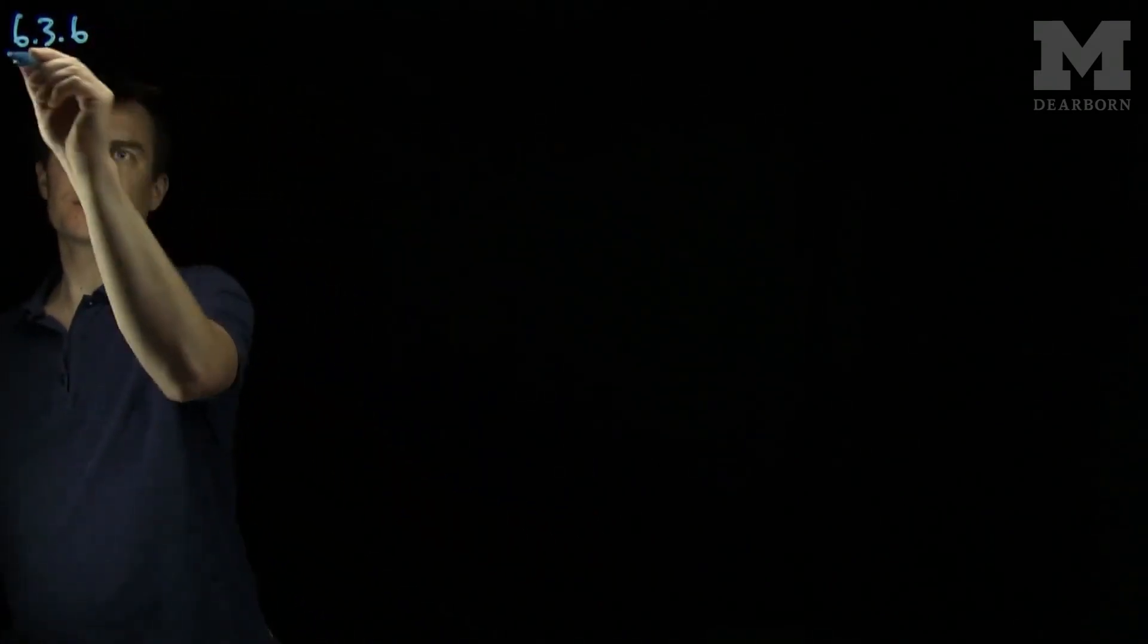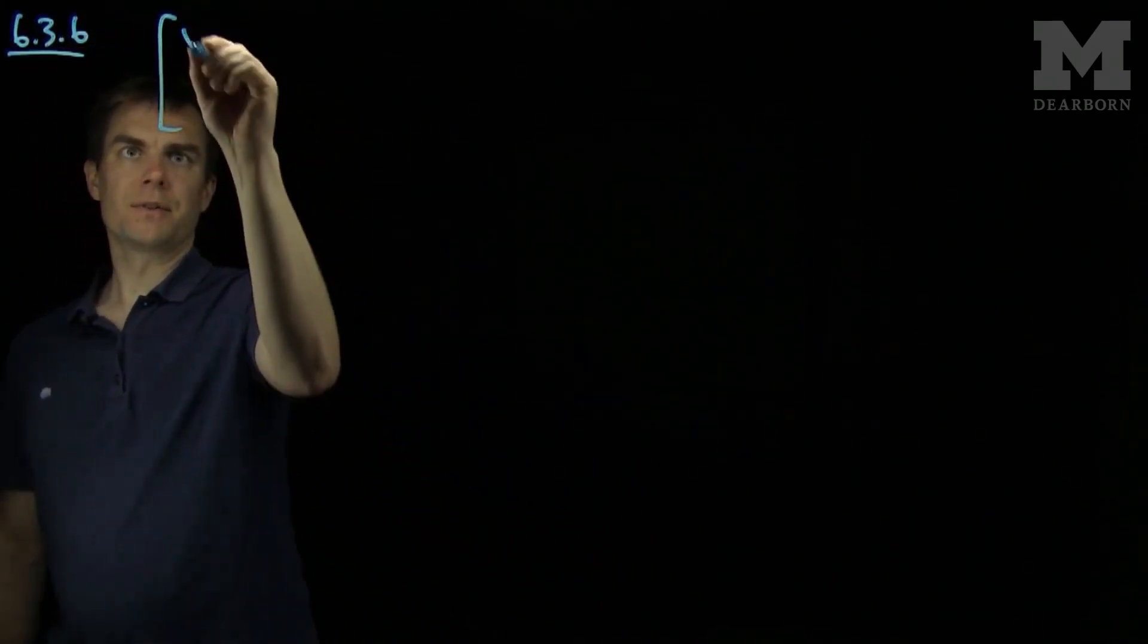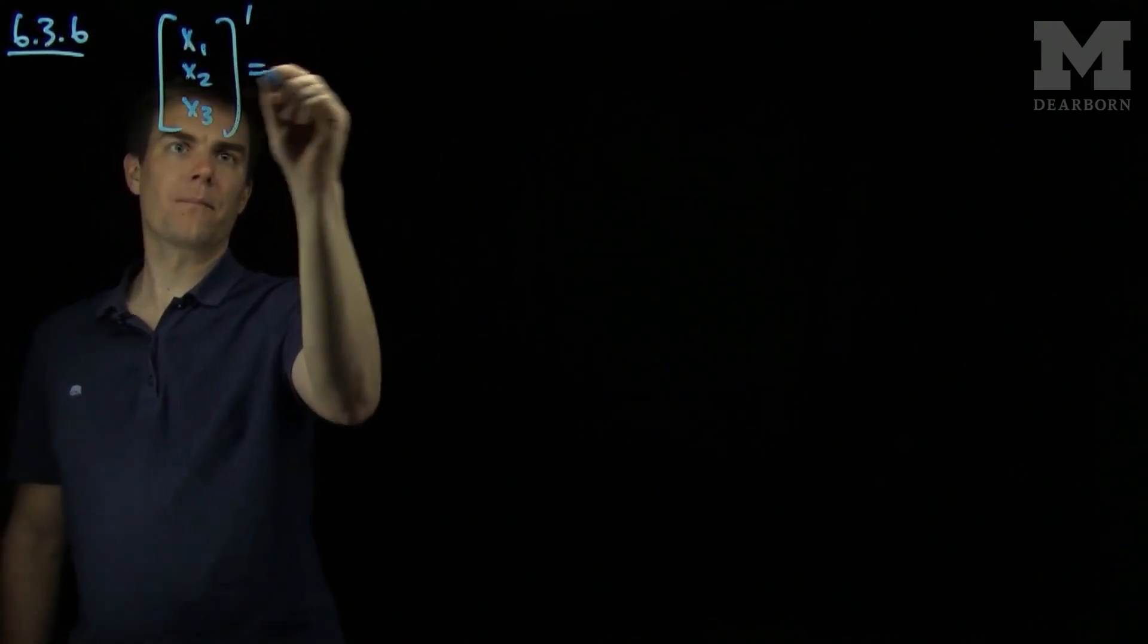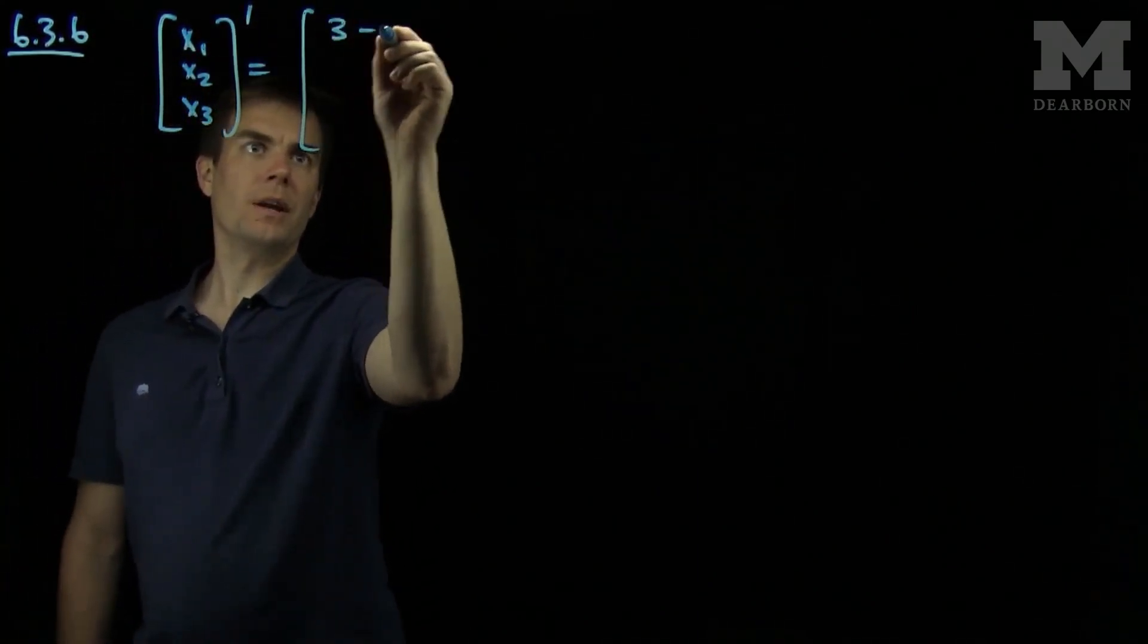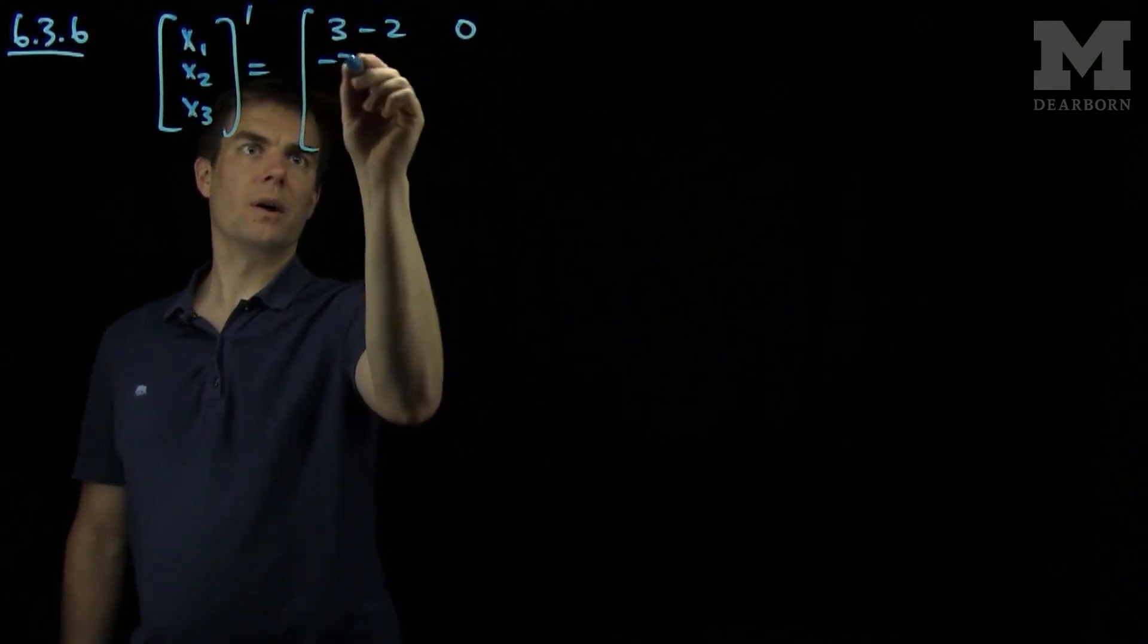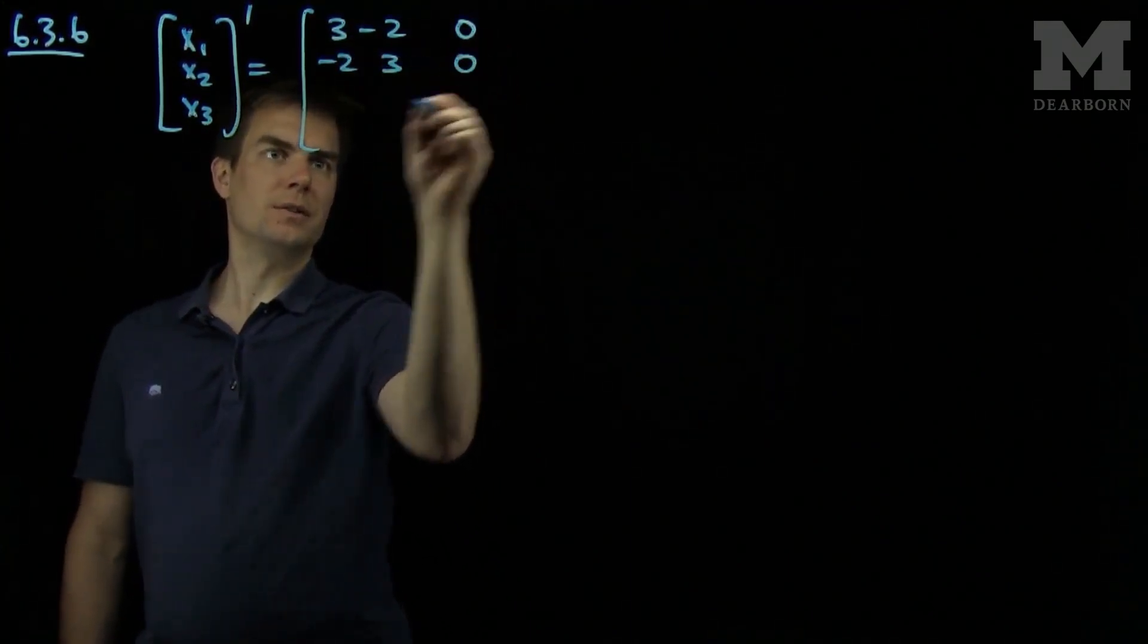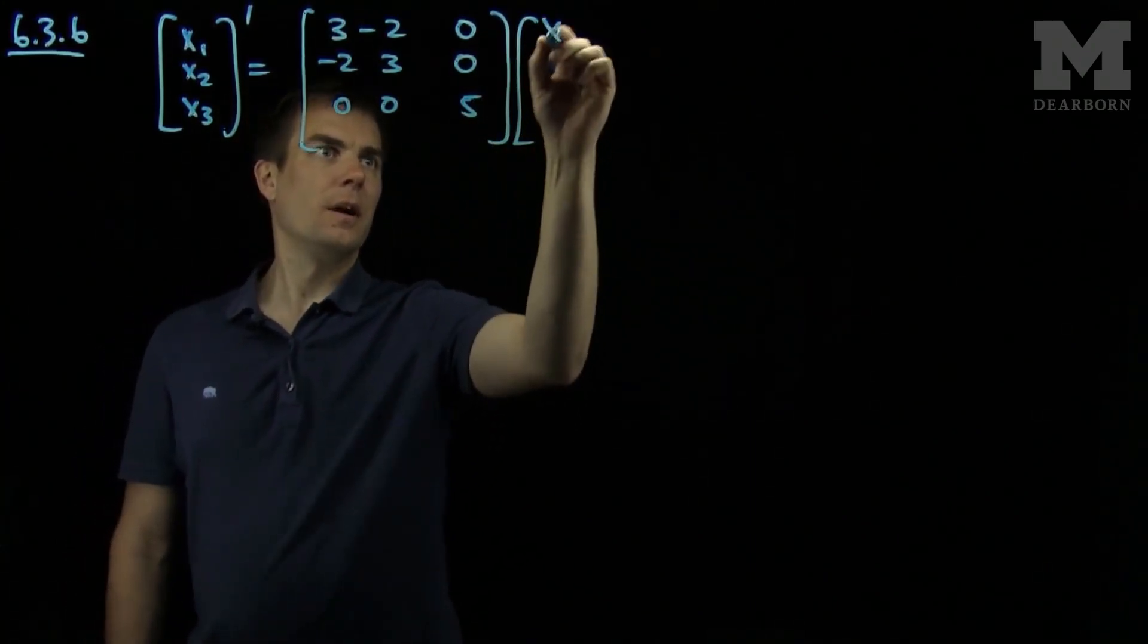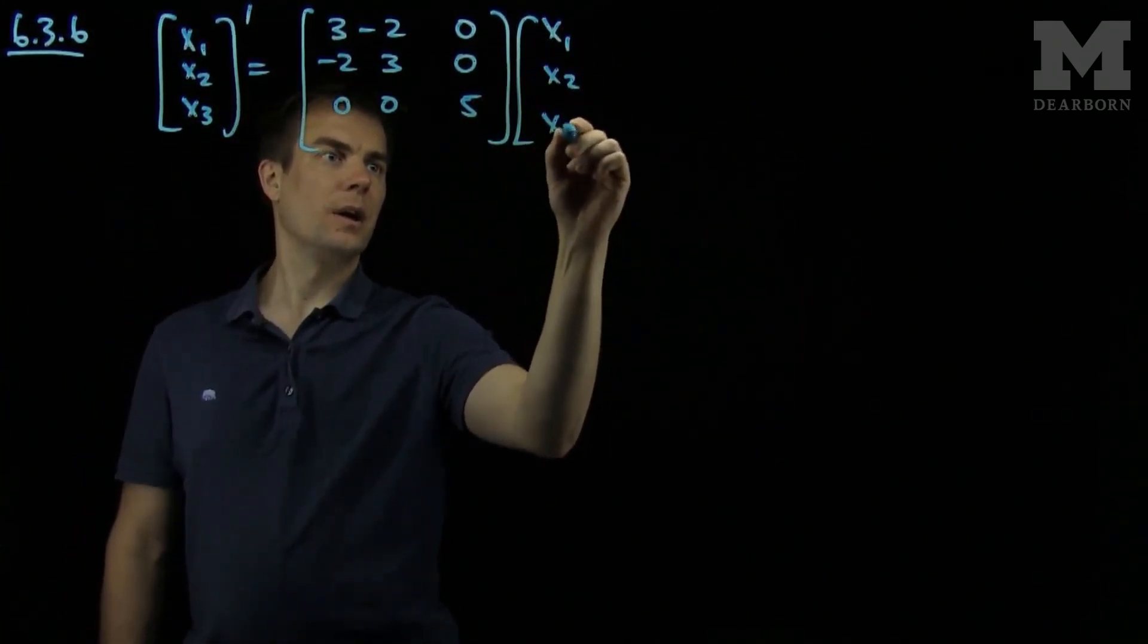6.3.6 asks us to solve the system x1, x2, x3 prime equals the matrix [3, -2, 0; -2, 3, 0; 0, 0, 5] times the vector [x1, x2, x3].